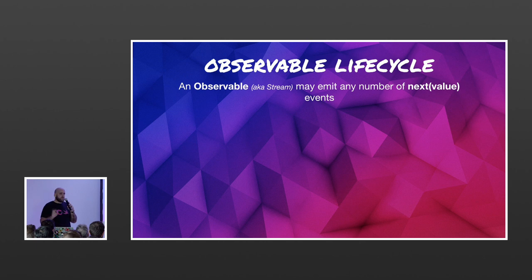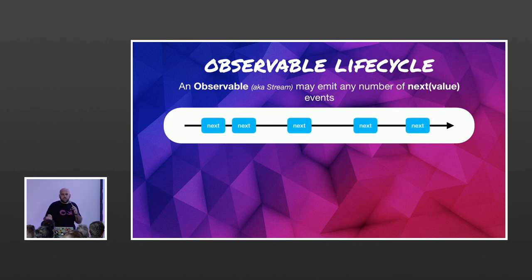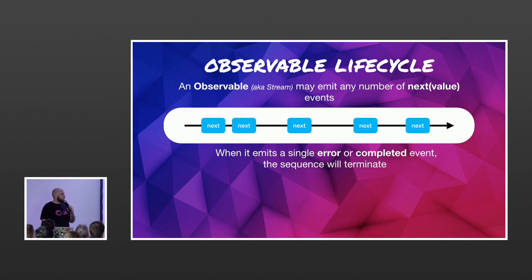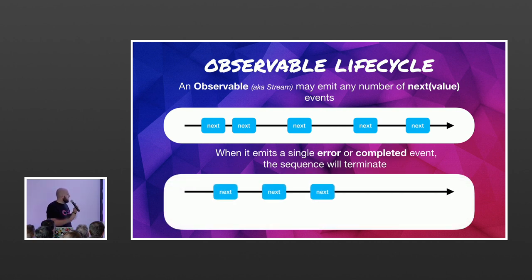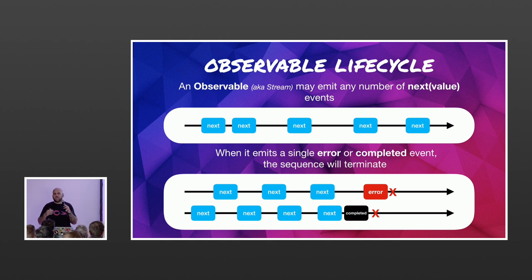The observable lifecycle is very important. There are three events an observable can emit: 'next' events which carry values, 'error' events, and 'completed' events. It can emit any number of next events infinitely as long as it doesn't complete or error. When a single error or completed event occurs, the sequence immediately terminates. If there are more next events on the stream after that point, they won't be pushed forward.